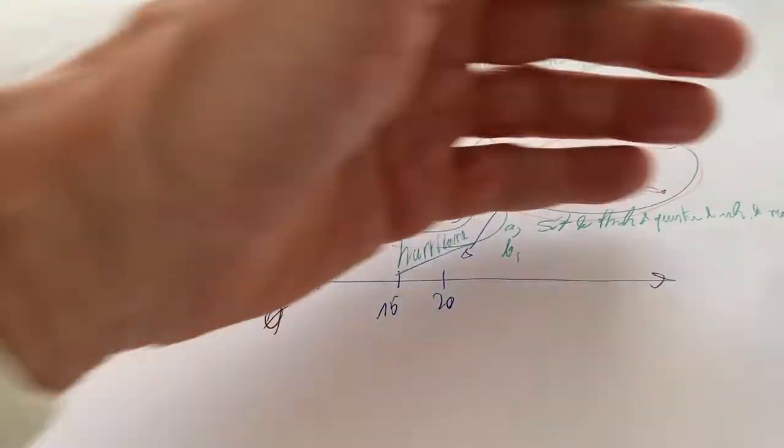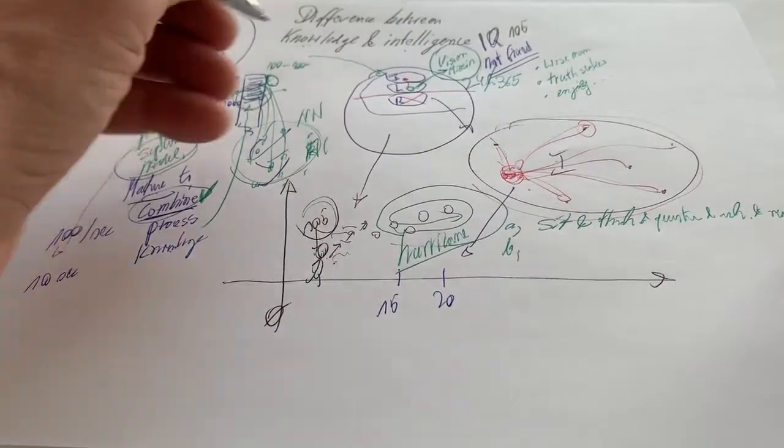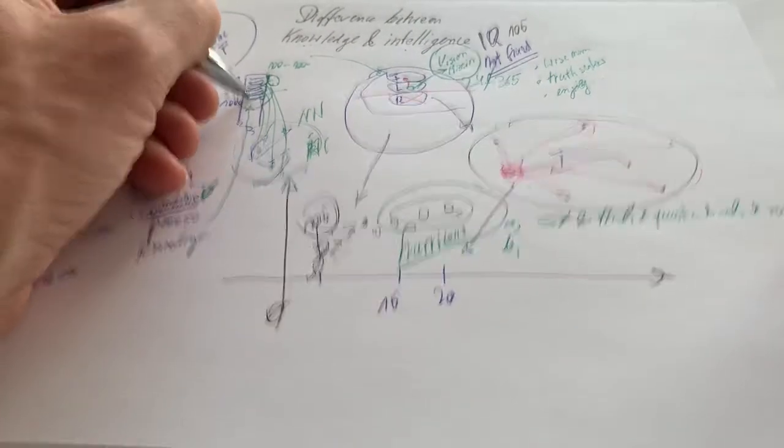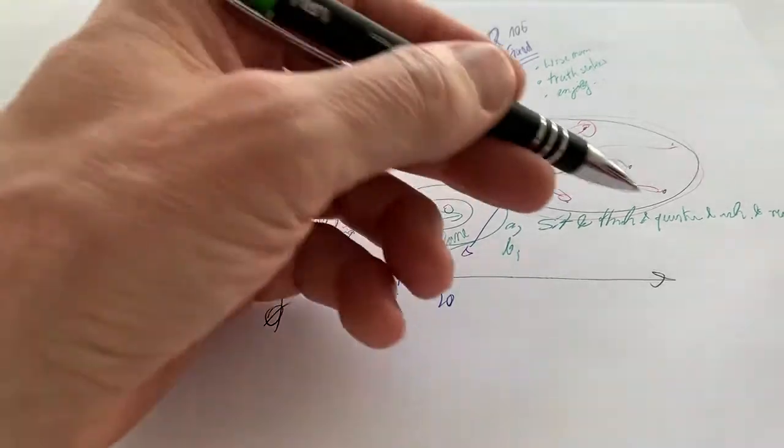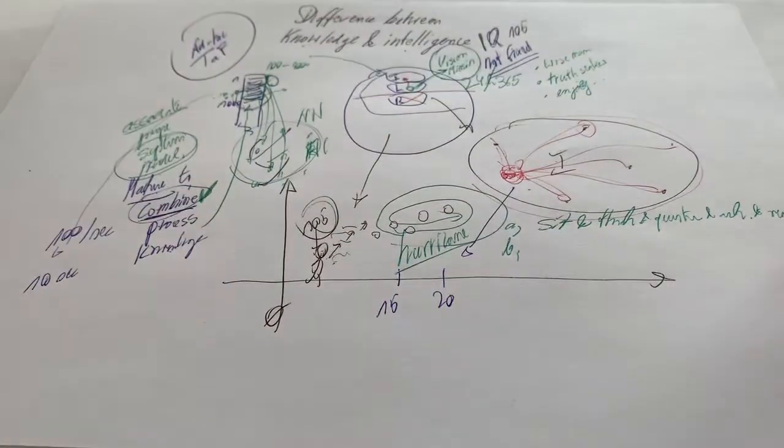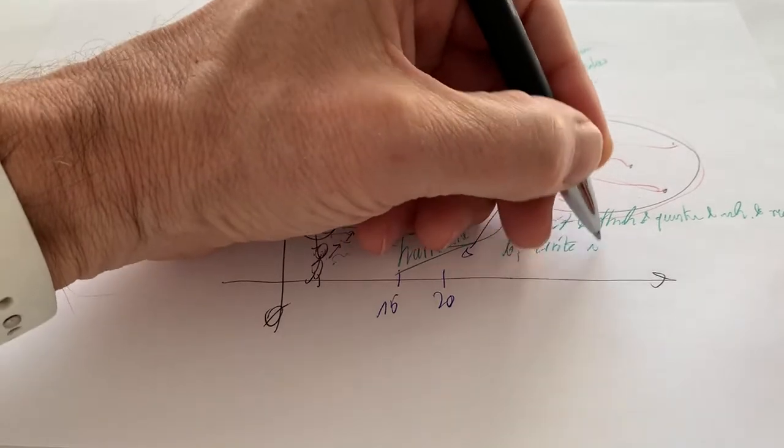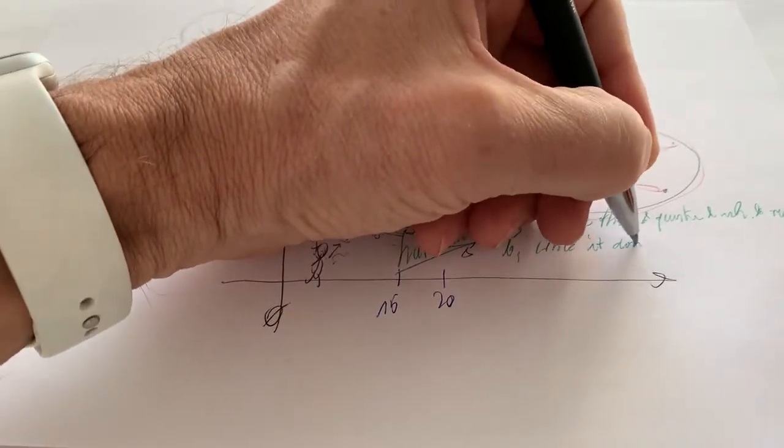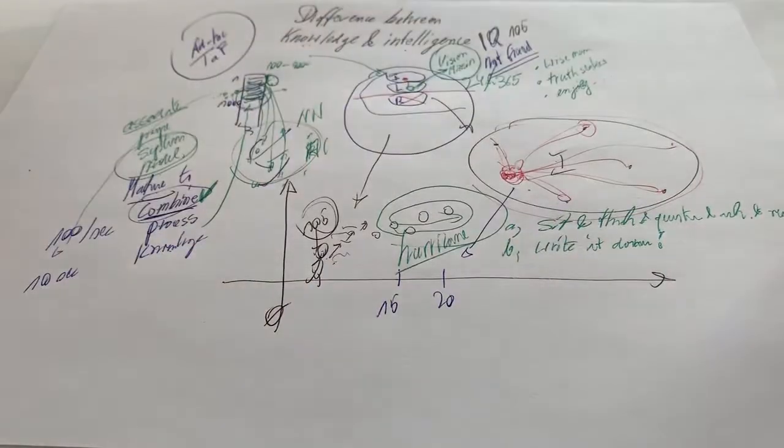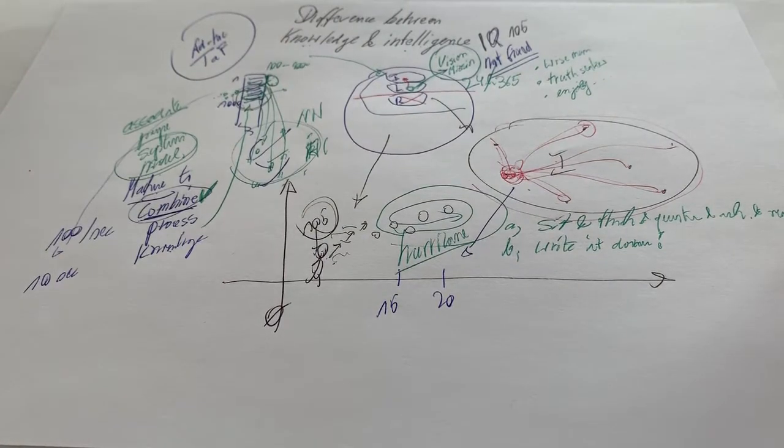Then B is, you have put some information in and you associated it as you thought. But now write it down. Write it down. Writing crystallizes thoughts.